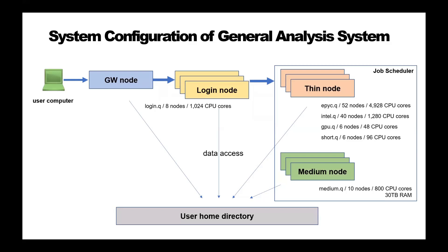This figure shows the system configuration of the General Analysis System. Users can perform interactive computation by connecting to the Gateway node with the SSH command, and then logging in to the Login node with the Qlogin command. The Login node is used for lightweight computations or to prepare for large-scale computations.